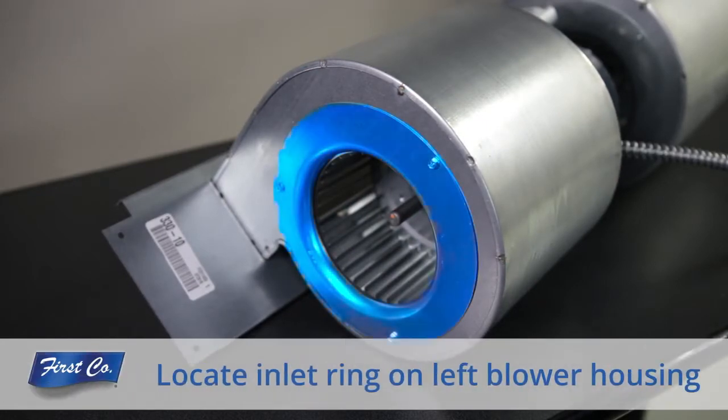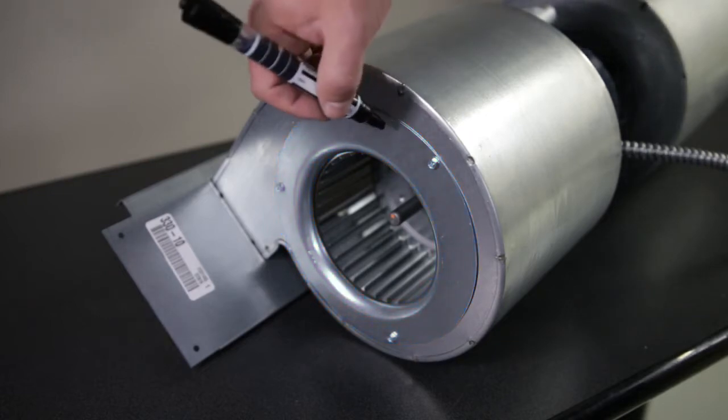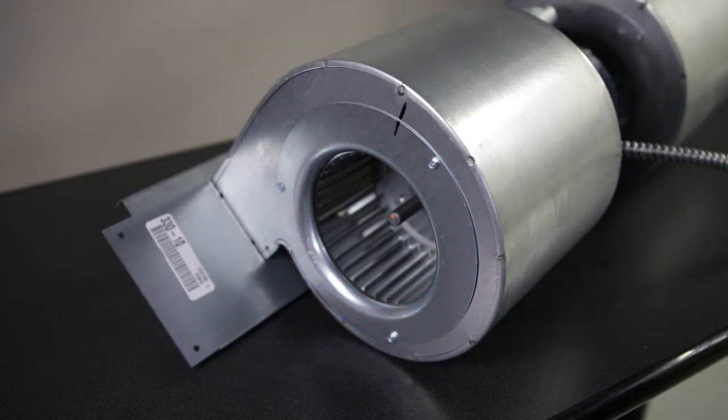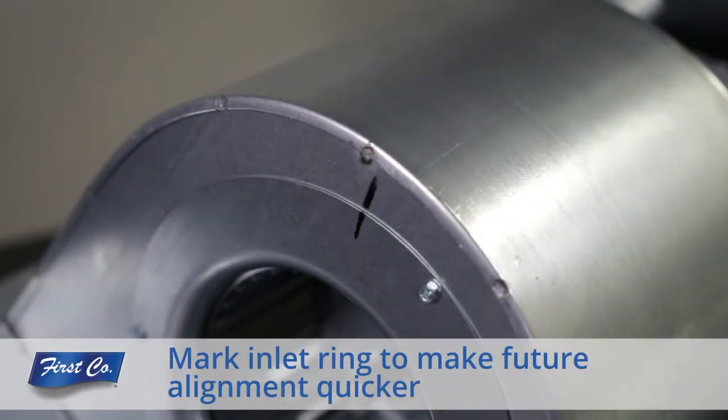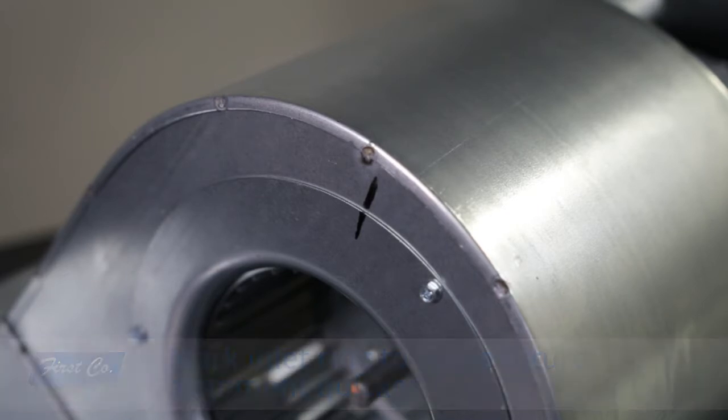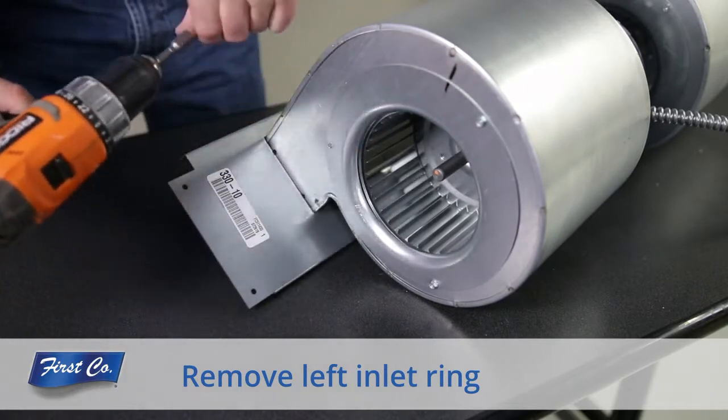First, locate the inlet ring on the left blower housing. In order to make reinstalling the fan motor easier, it is recommended that you mark the outside of the inlet ring with a pencil or marker to make the inlet ring realignment and reinstallation quicker. Remove the left inlet ring and set it to the side for reinstallation.